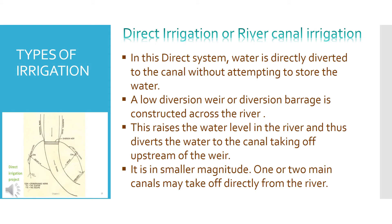In the Direct Irrigation or River Canal Irrigation system, water is directly diverted to the canal without attempting to store the water.